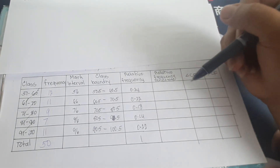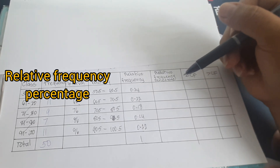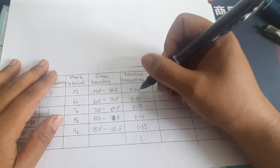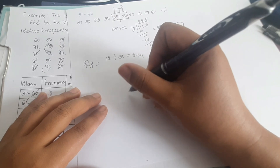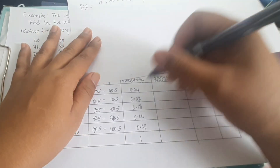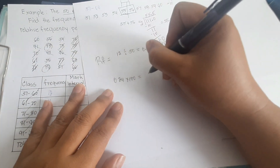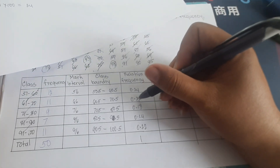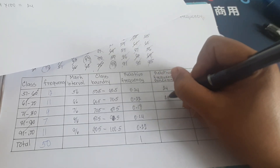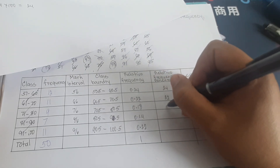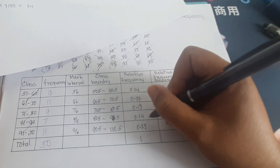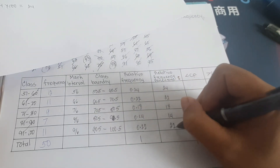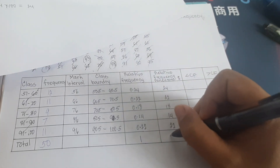Relative frequency percentage is equal to the relative frequency times 100. So: 0.24 × 100 = 24, 0.22 × 100 = 22, 0.18 × 100 = 18, 0.14 × 100 = 14, and 0.22 × 100 = 22. The total relative frequency percentage equals 100.